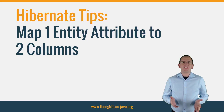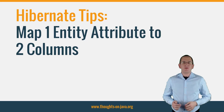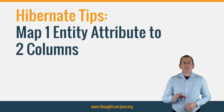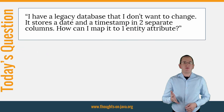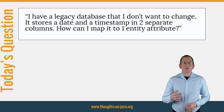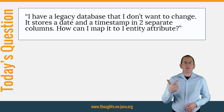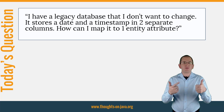Hi, I'm Torben Janssen from Thoughts on Java.org with a new Hibernate Tip. Today I will answer a question that often pops up when somebody needs to map a legacy database: I have a legacy database that I don't want to change. It stores a date and a timestamp in two separate columns. How can I map it to one entity attribute?